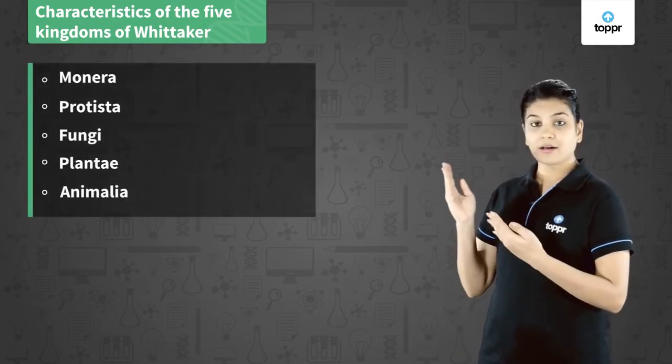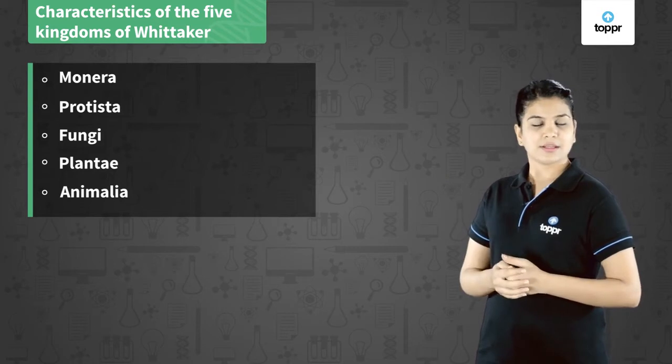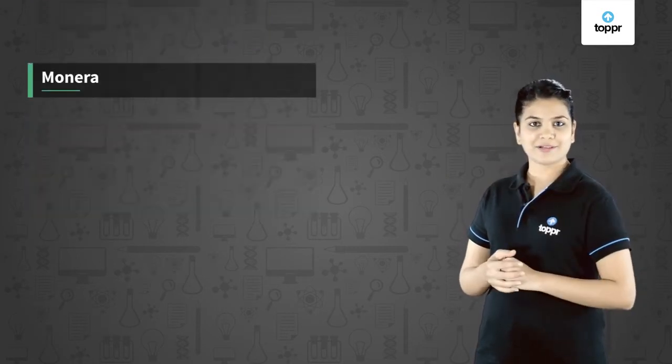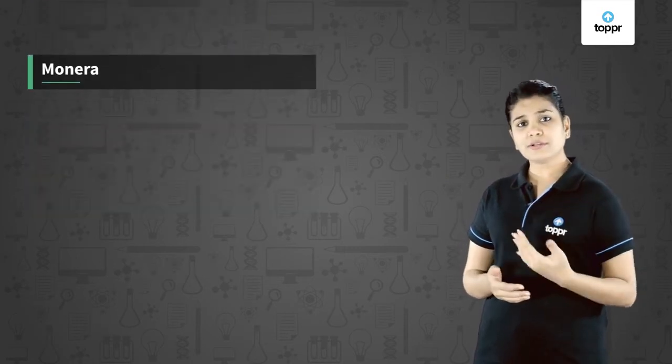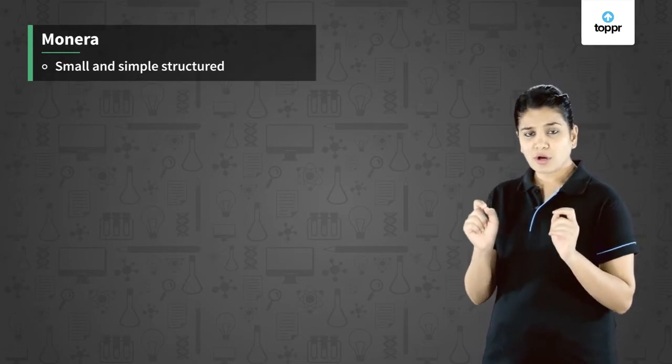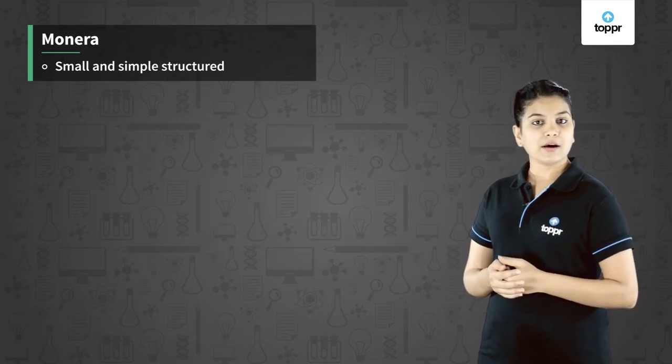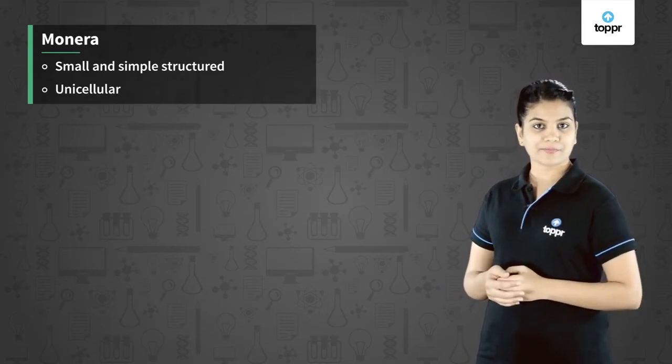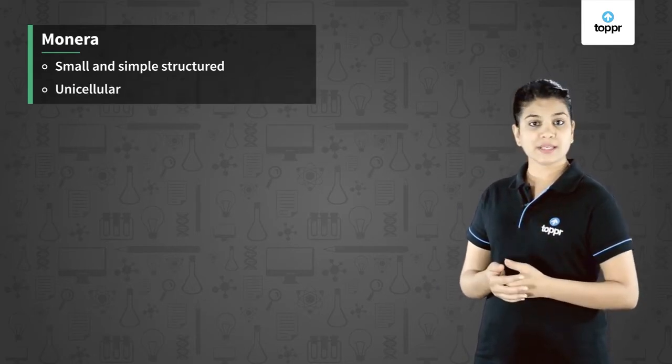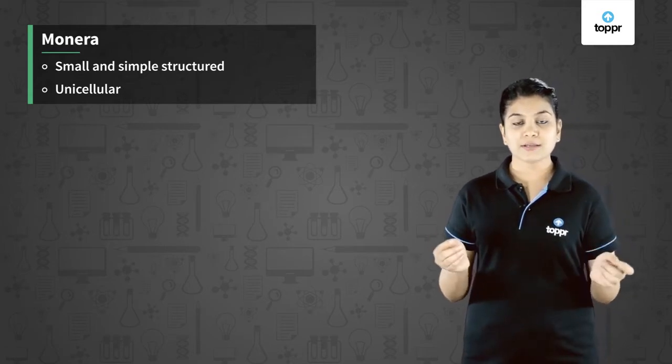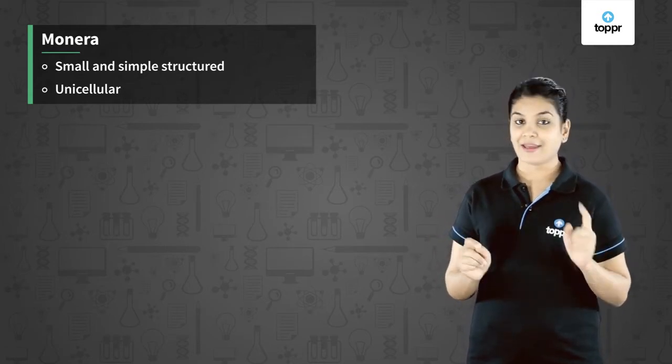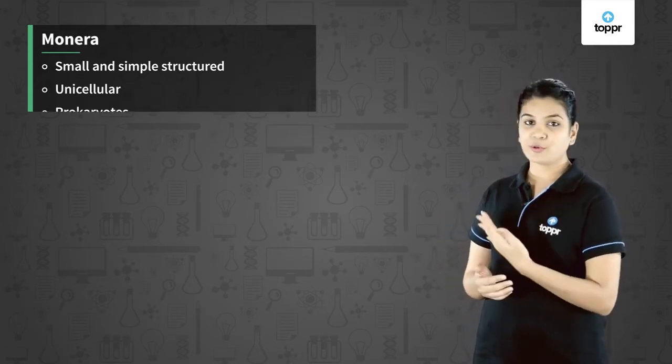Moving forward, let us see the details of the five kingdom classification of Whittaker. Let us first talk about Monera. Monerans are the small, simplest structures. These organisms are unicellular. They do not possess a nucleus with nuclear membrane and hence they are called prokaryotes.